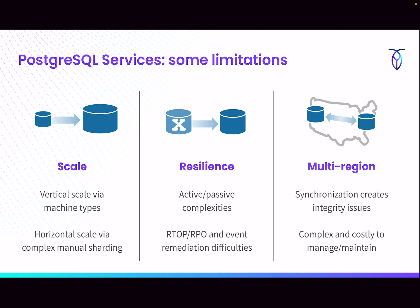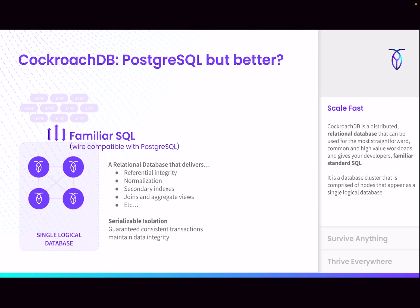These are the three core limitations that CockroachDB was built to address. For Cockroach, we think of scale as the ultimate problem of every application — resilience is almost a function of scale, and multi-region expansion is just geographic scale. It all starts with familiar SQL. CockroachDB is a relational database, wire compatible with Postgres — same syntax, referential integrity, normalization, all the things you expect from a relational database, but also with serializable isolation. We offer the highest level of isolation in our database.